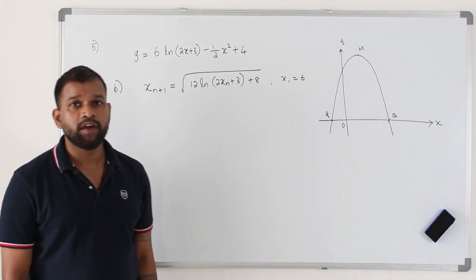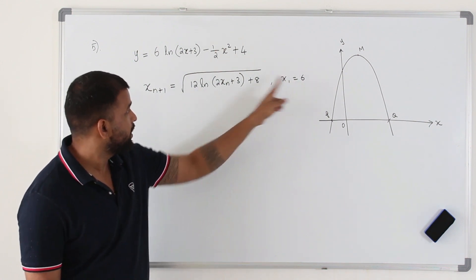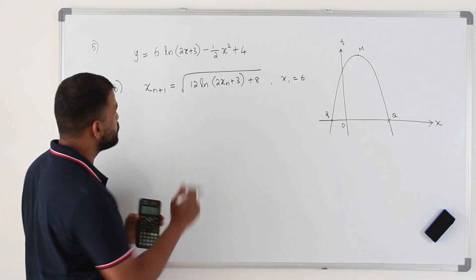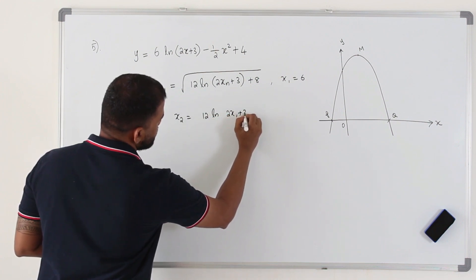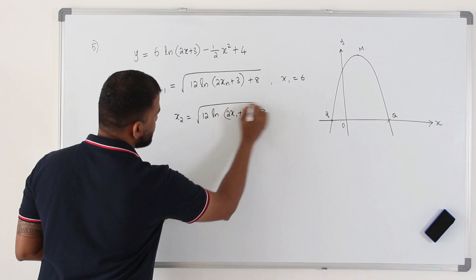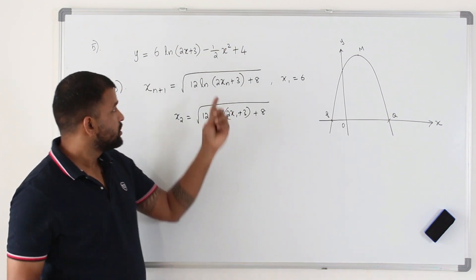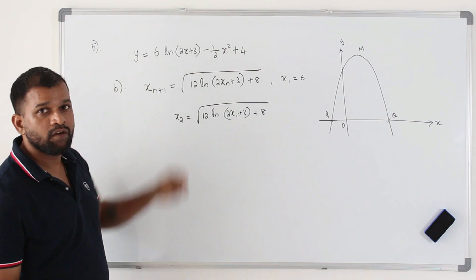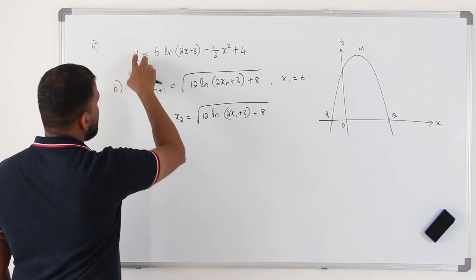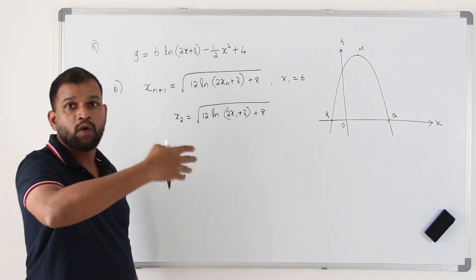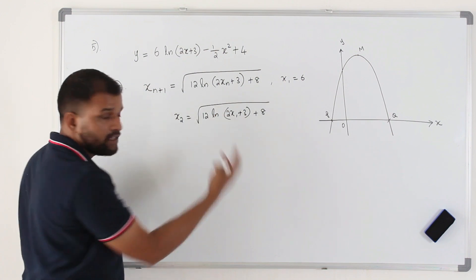So you have an iterative formula given here with the initial value x1. They want you to find the value of x2. So sub in x1 in here, you get the value of x2. So x2 is basically square root of 12 ln(2x1 plus 3) plus 8. Replace x1 by 6, you get the value of x2. But here you see, in some questions, they might ask you to frame this iterative formula from the original function. So you need to take this function. You can replace y by 0. They are going to ask you to rewrite y equals 0 in this form.